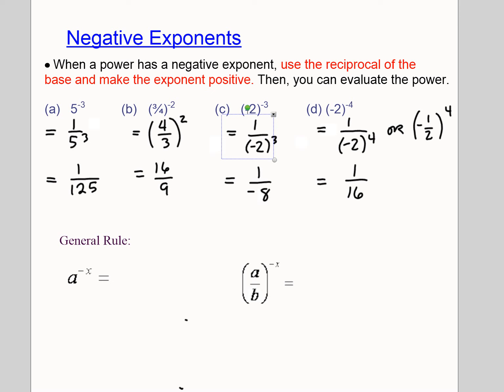So the general rule is any number to a negative exponent, we do the reciprocal of the base, and that makes the exponent positive. When there's a fraction, same thing. Reciprocal of the base, that makes the exponent positive.